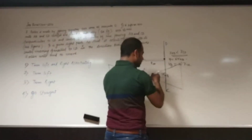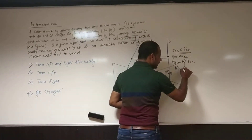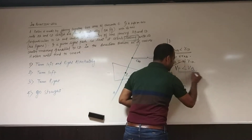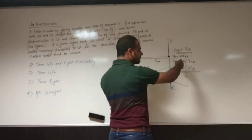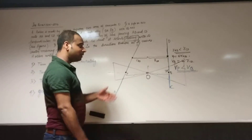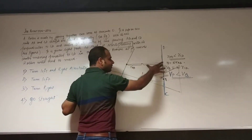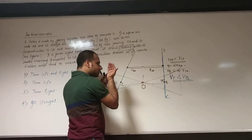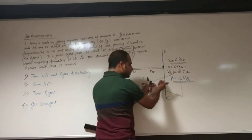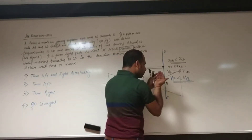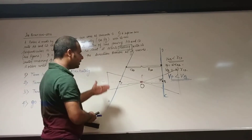Since RAB is less than RCD, and omega is the same for a rigid body, VP will be less than VQ. To be clear, the contact point itself has zero velocity because it is pure rolling — but the point P on the axis above that contact has velocity omega·RAB, and Q has velocity omega·RCD. So VP is less than VQ.